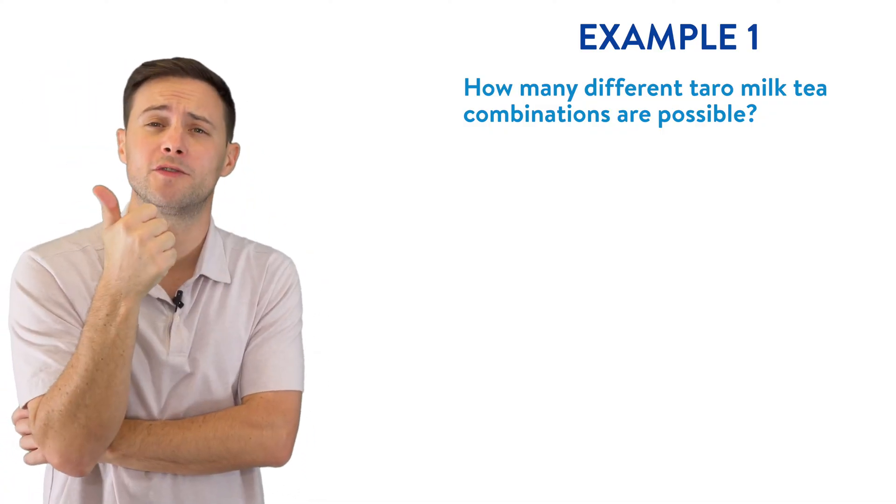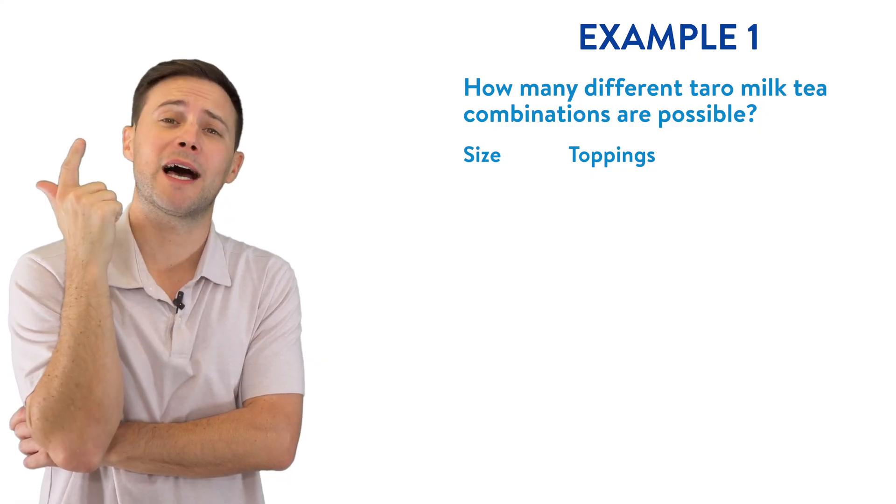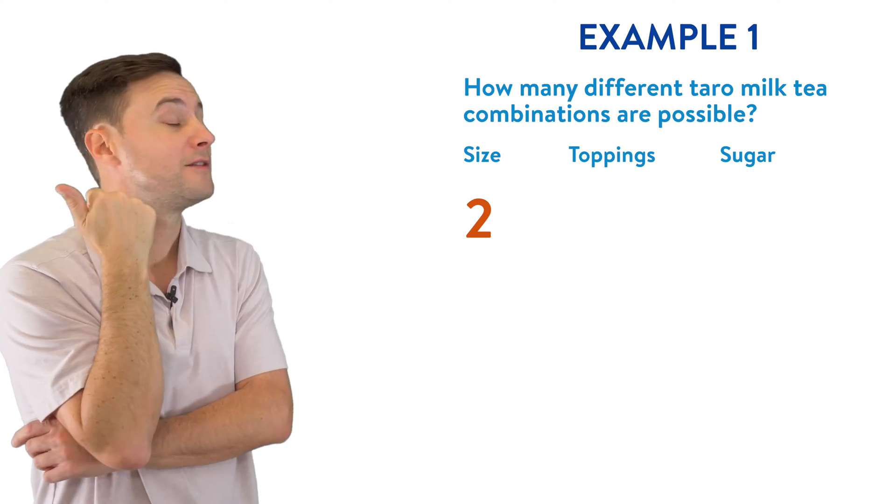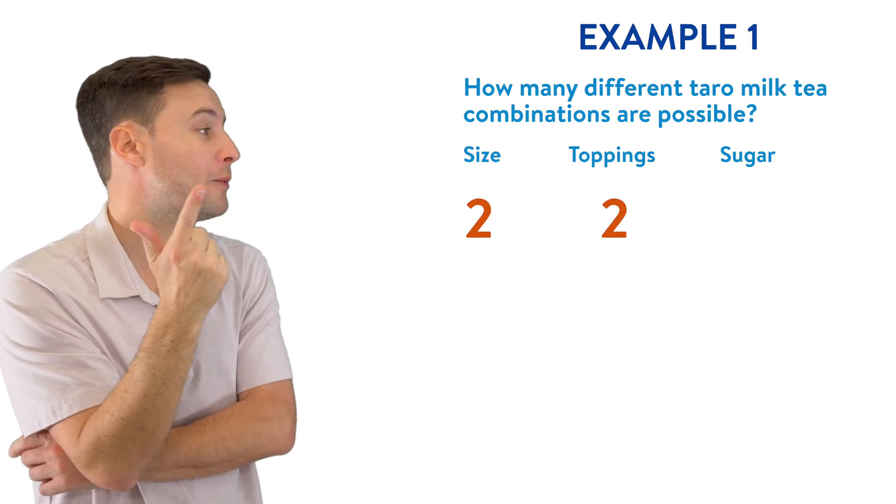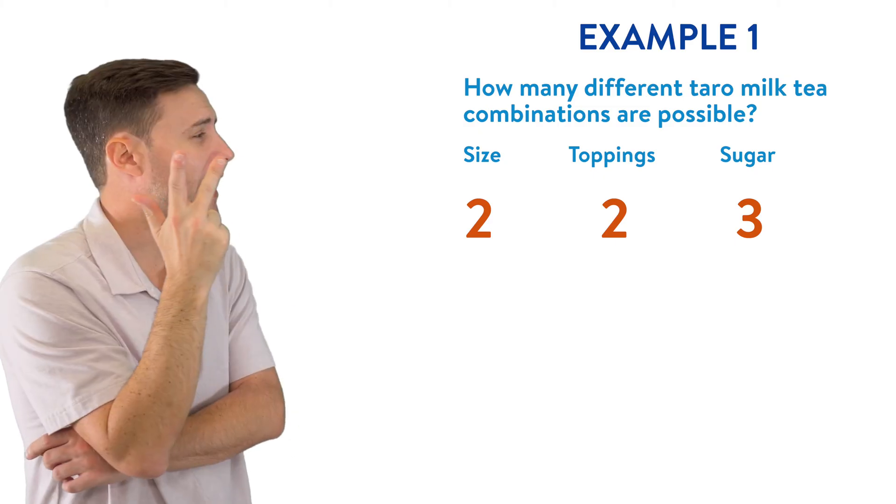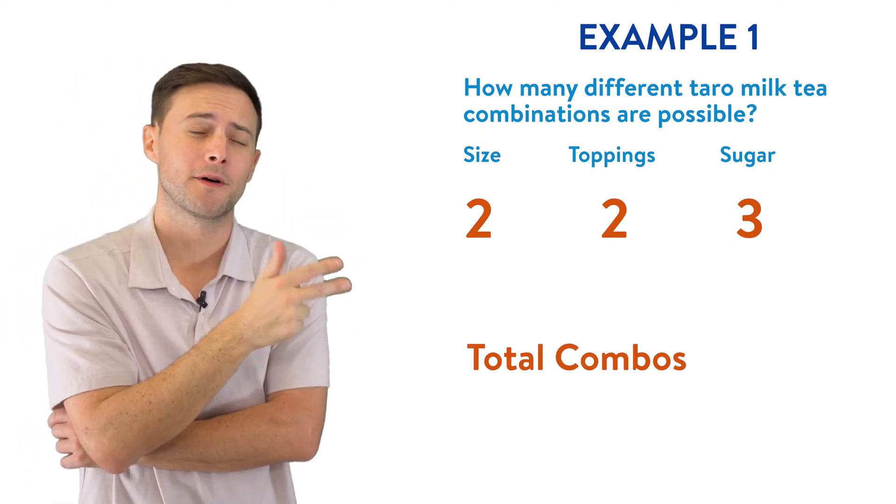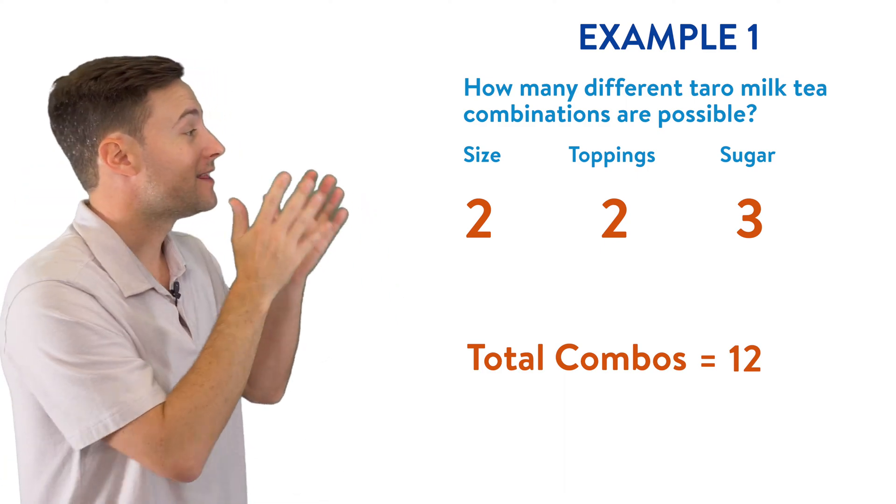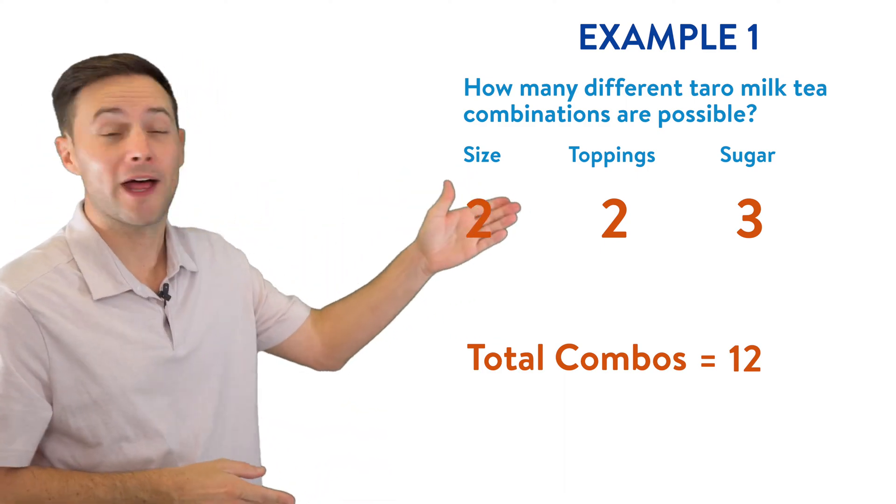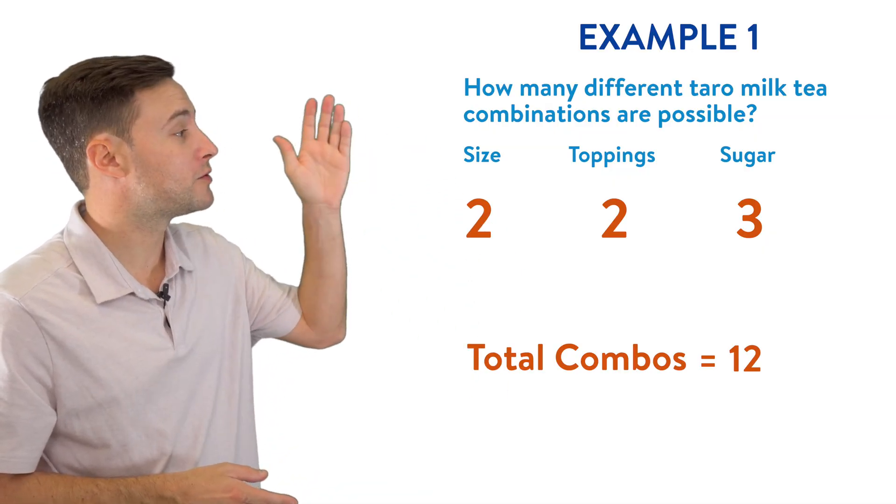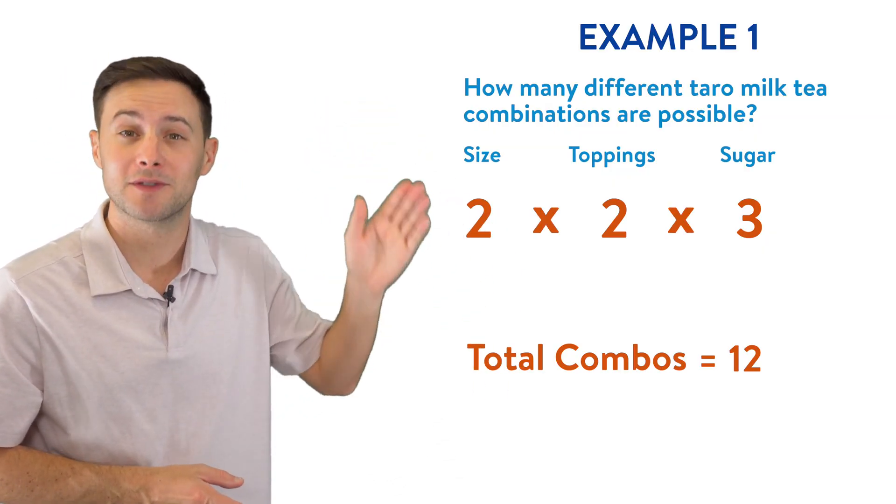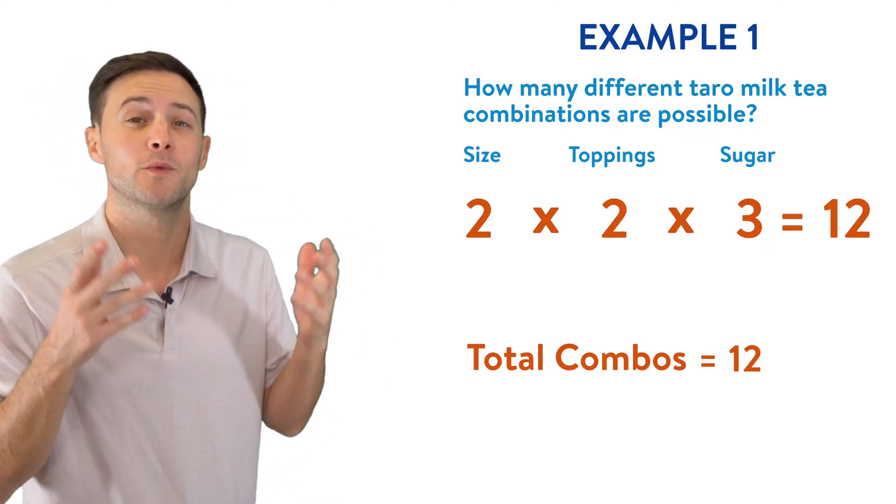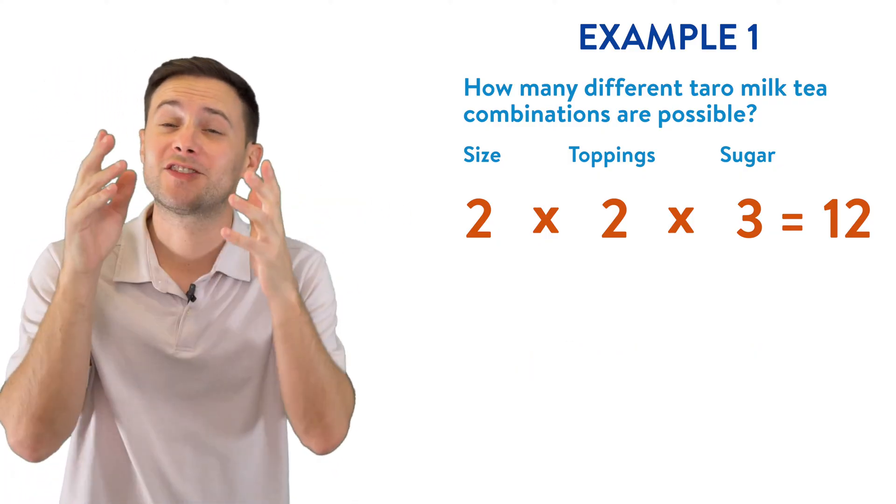Let's look back to the first example. We first had to choose the size, and then the toppings, and then lastly, the sugar level. And there were two sizes, two toppings, boba or not boba, and three options for the sugar. And the total number of possible outcomes was 12. And if you're saying you just multiply the outcomes from each event, you're exactly right. For that first example, if we just go two times two times three, we would also get 12 for our sample space, which is the total number of outcomes.